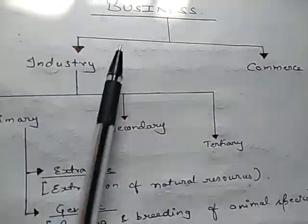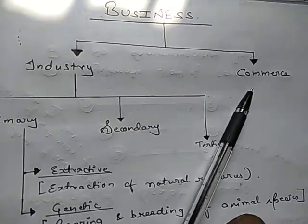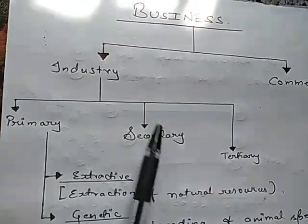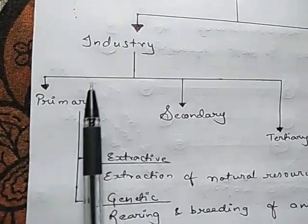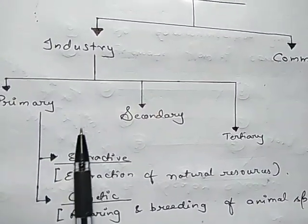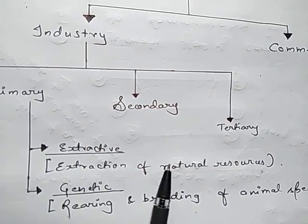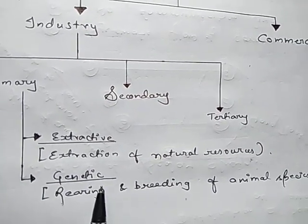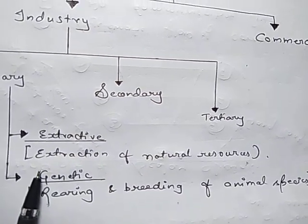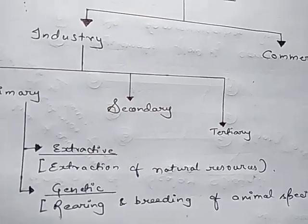So to summarize: business is divided into two categories — industry and commerce. Industry is further divided into three categories: primary, secondary, and tertiary industry. Today we discussed primary industry, which has two types — extractive industry, where we extract natural resources, and genetic primary industry, where we do rearing and breeding of animals. In the next video we will discuss secondary industry.